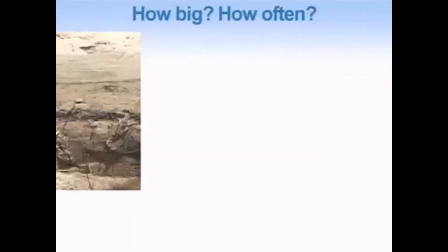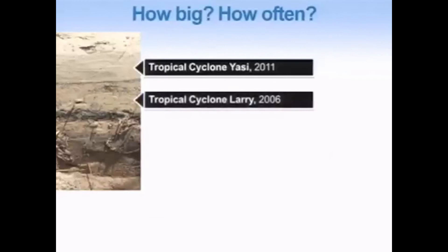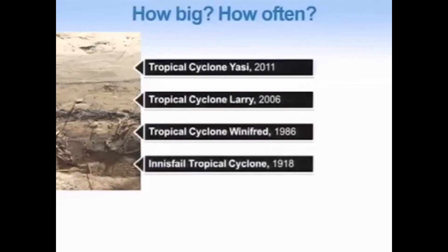We dug a hole through the beach ridge, and you can see sand layers separated by other sand layers. The top layer is from tropical cyclone Yasi in 2011, below that is tropical cyclone Larry from 2006, and we have eyewitness records of these events. Below that is tropical cyclone Winifred from 1986, and below that the Innisfail tropical cyclone of 1918. We need to use nuclear techniques to go back in time to understand the timing, frequency, and impact of these events on the shoreline.